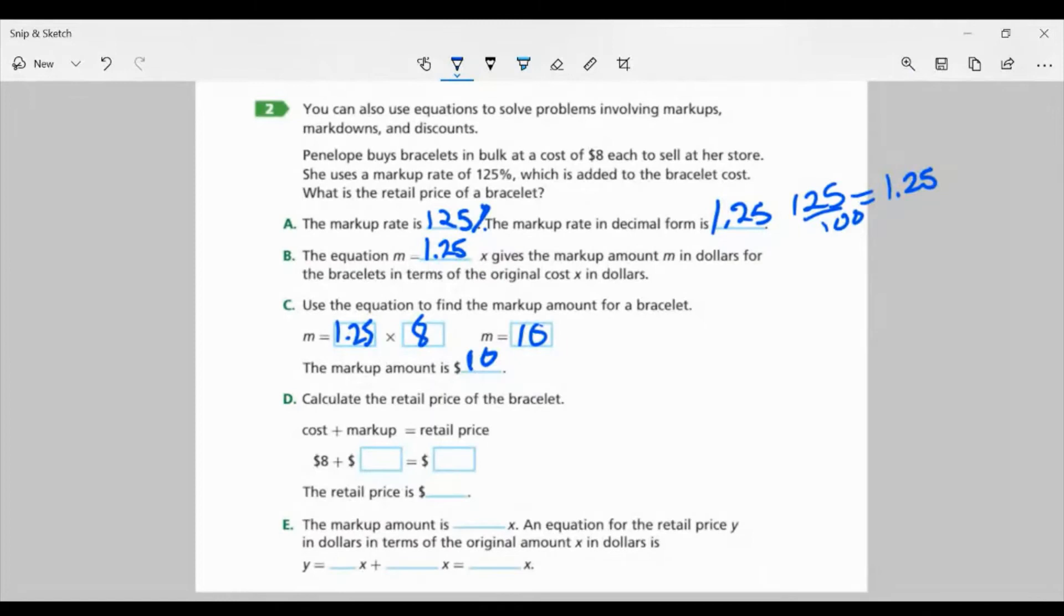Now part D, it wants us to calculate the retail price of the bracelet. So that's going to be cost plus markup equals retail price. The cost was $8, the markup is $10. When we add those together, $18. So the retail price is $18.